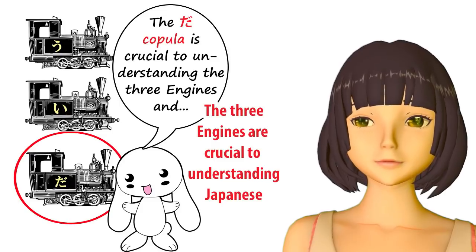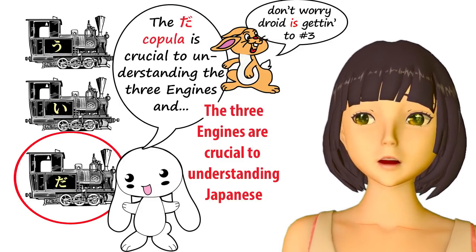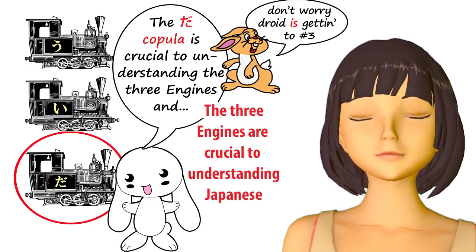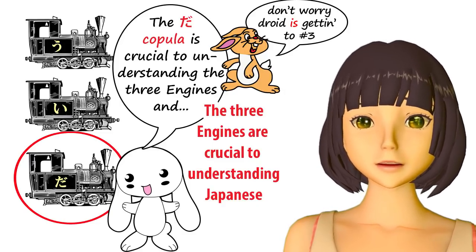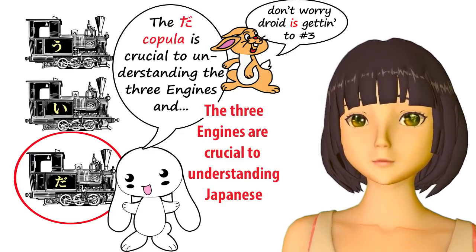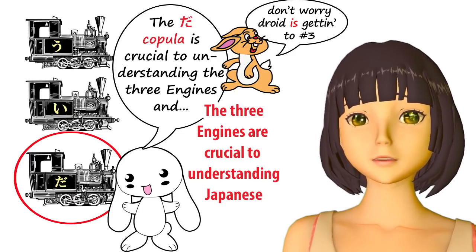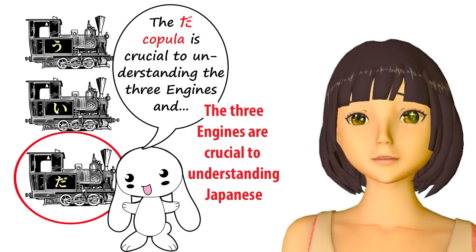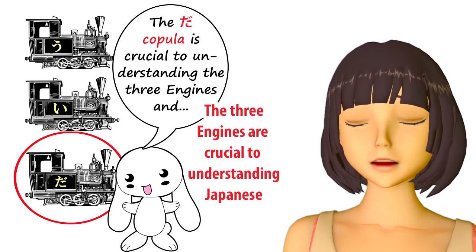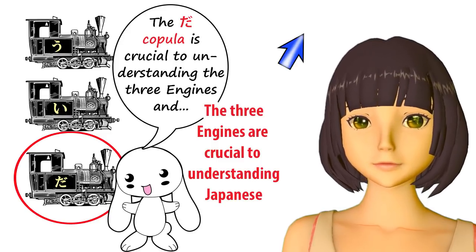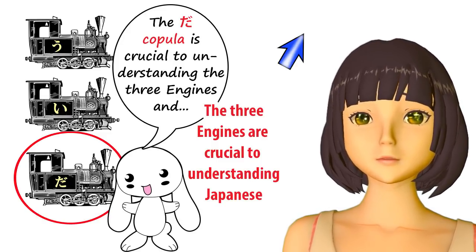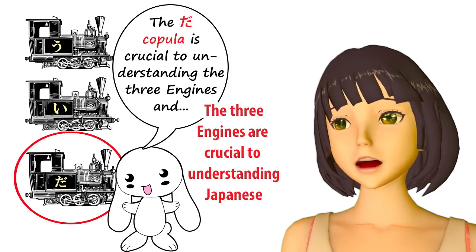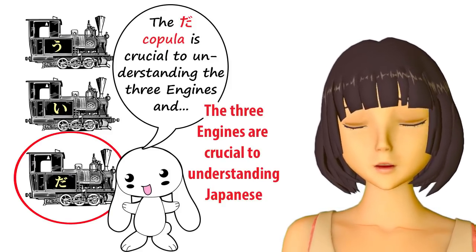So how important is it that we misunderstand the da copula? It's not central to every Japanese sentence the way the ga particle is — so is it that bad? Well, as a matter of fact, it is, because it takes away another of the absolute pillars of understanding Japanese structure, and that is understanding the three engines and the three core sentences. There are only three ways a logical Japanese sentence can end: it can end with a verb, an adjective, or a noun plus copula. It can't end with a noun on its own — it can only end with a noun plus copula.